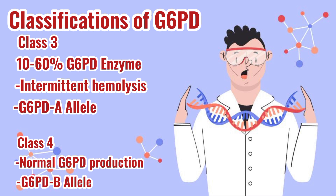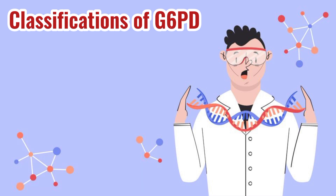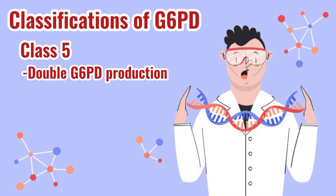Class 4 are considered the wild type — the normal persons. They carry the G6PDB allele, which still considers them as a candidate for G6PD. Class 5 are those who generate twice as much enzyme as normal persons — they have double the glucose-6-phosphate dehydrogenase enzyme. Still, with the enzyme being doubled, research shows there is no clinical issue of any sort.